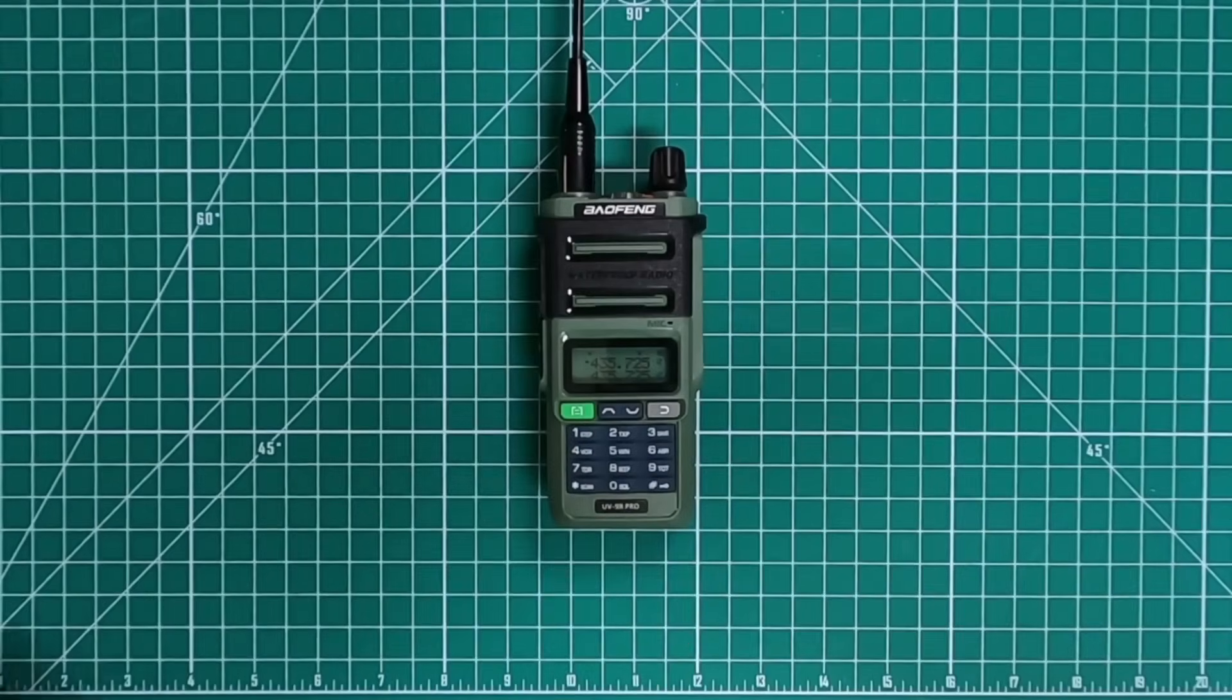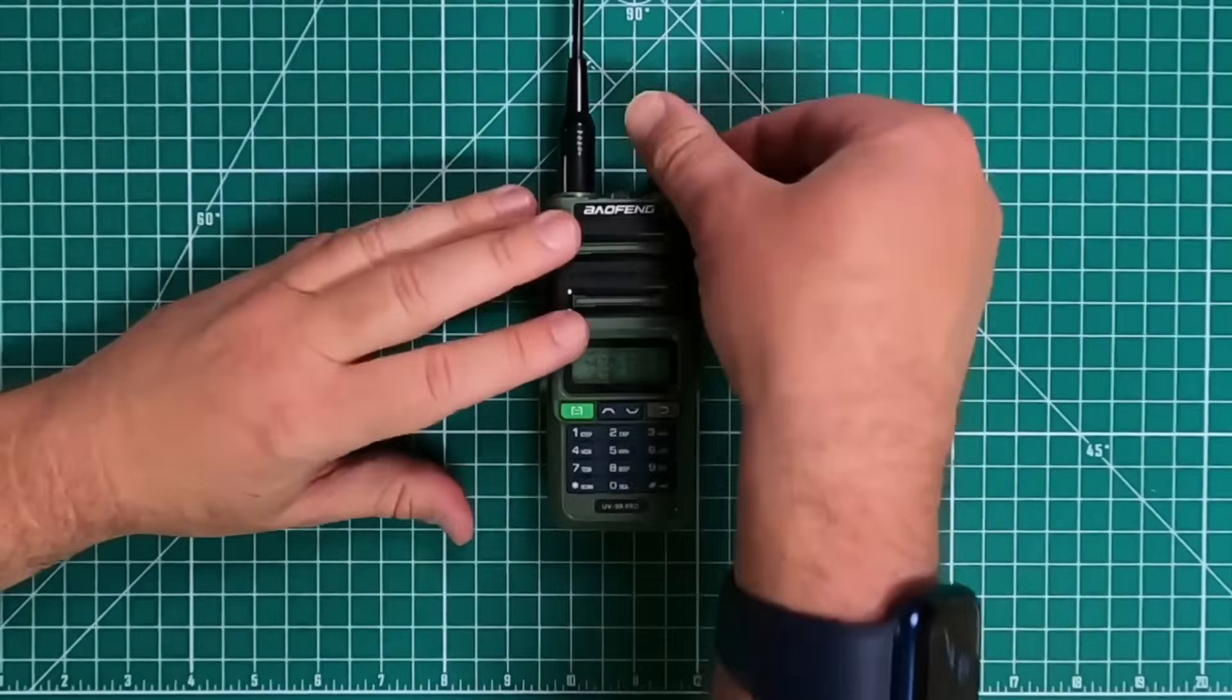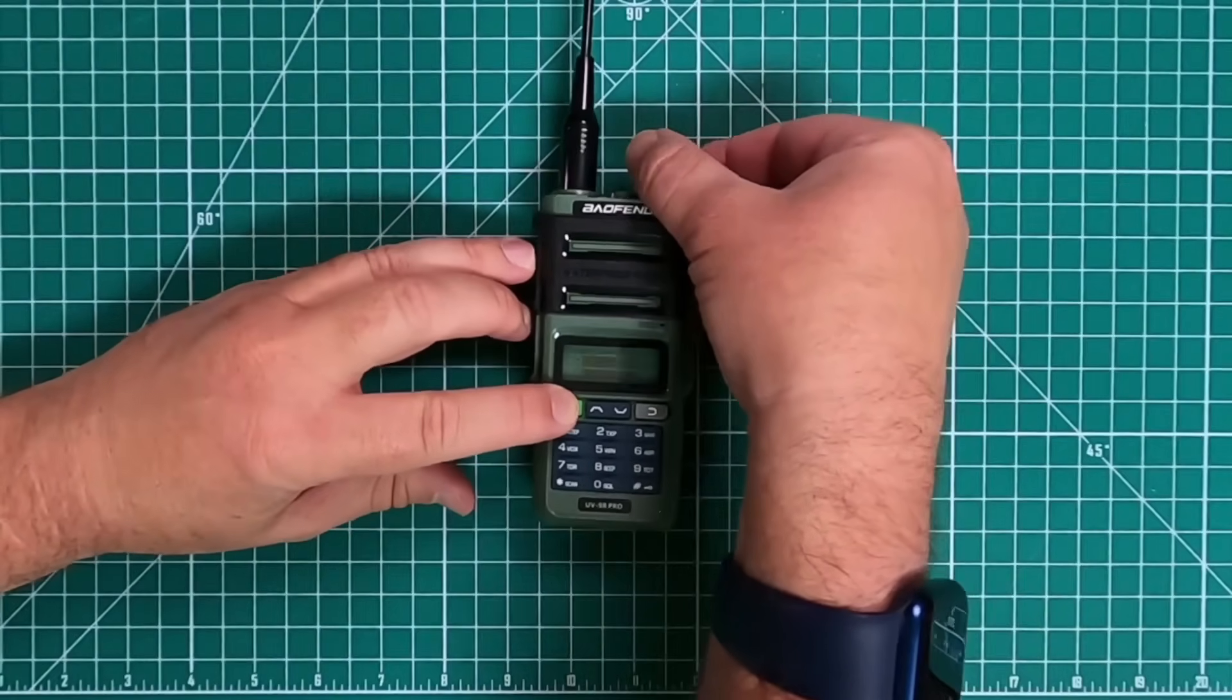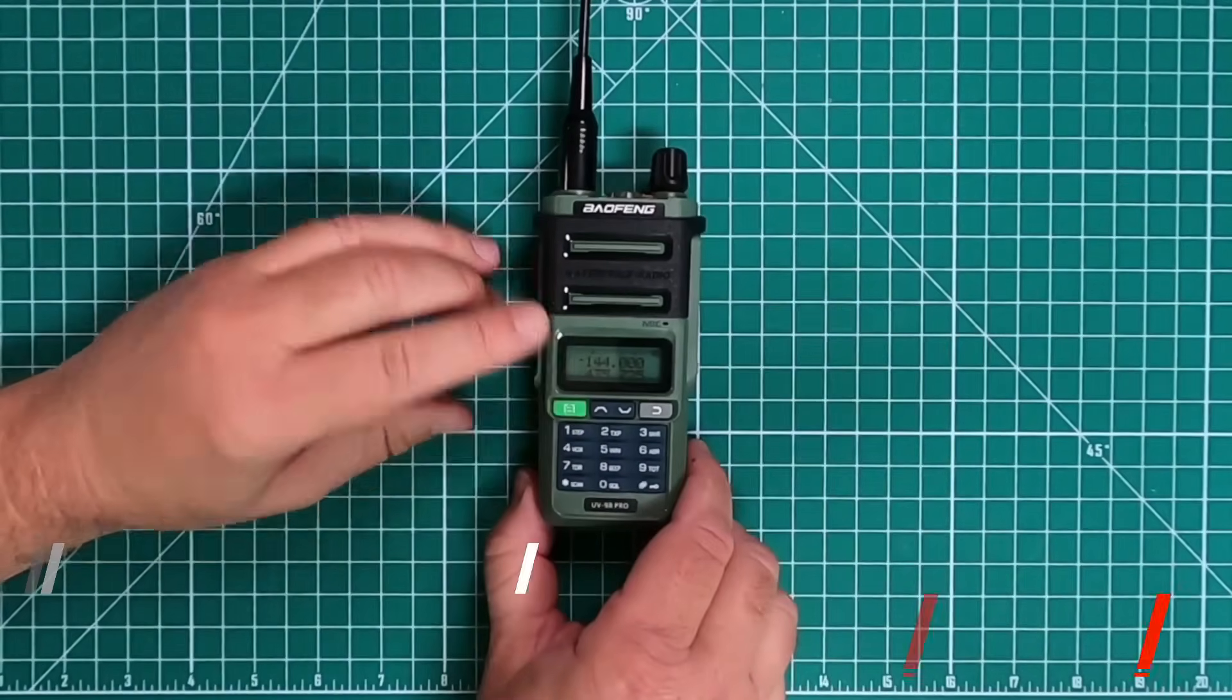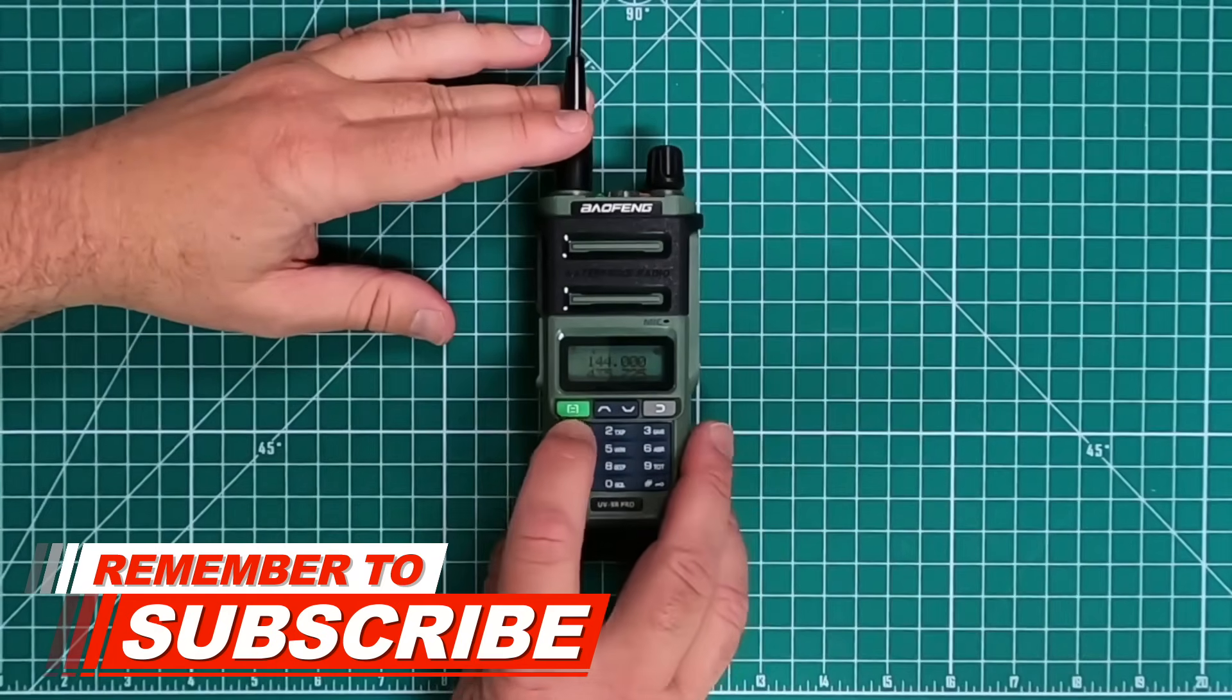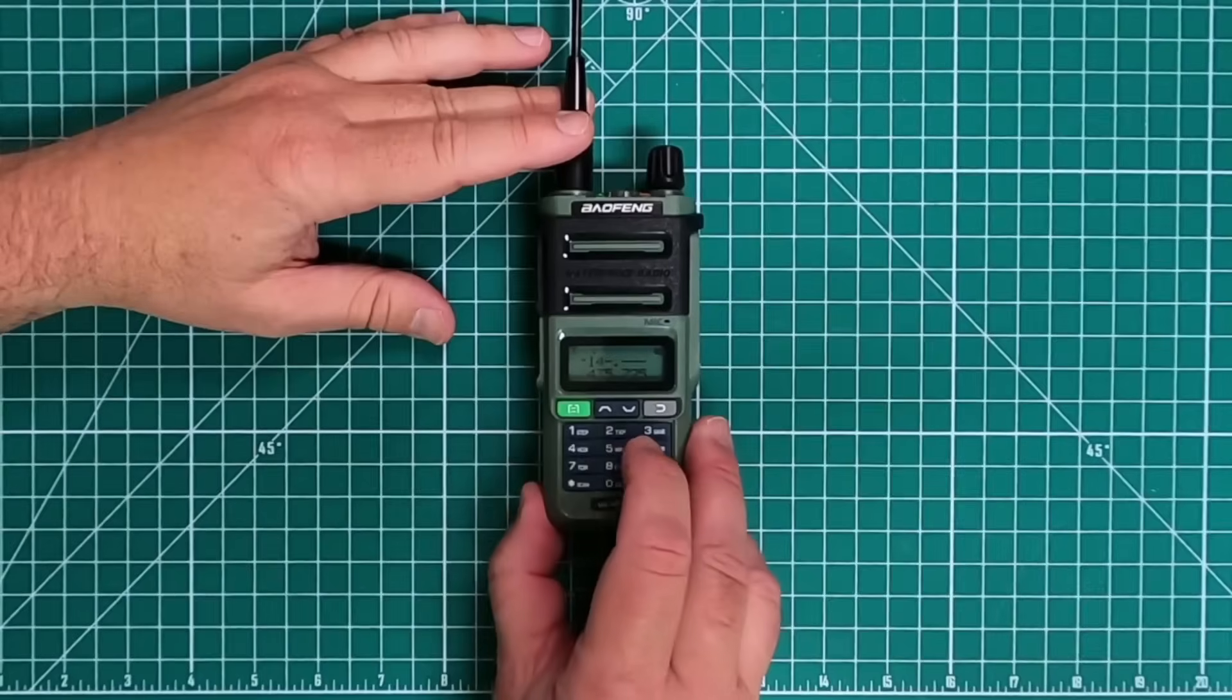I'm going to show you how to program a simplex frequency and a repeater into the radio. If you've ever done this with any of the UV5Rs, it's pretty much the same. Now, to get to the VFO, what you're going to have to do, turn the power off, press and hold the menu button, turn the power back on, that'll take you into VFO. First, what we're going to do is simplex. And we're going to do the national calling frequency, 146520.